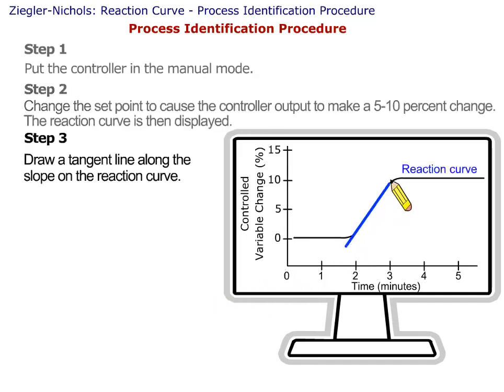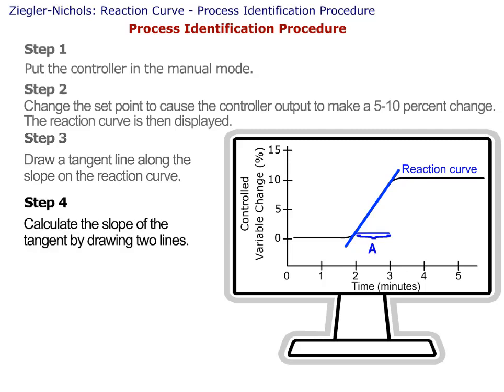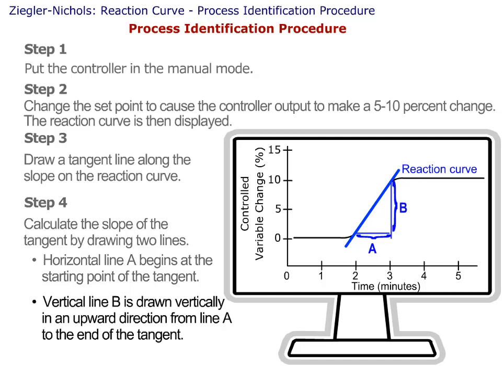Step 3: Draw a tangent line along the slope on the reaction curve. And Step 4: Calculate the slope of the tangent by drawing two lines. Horizontal line A begins at the starting point of the tangent. Vertical line B is drawn vertically in an upward direction from line A to the end of the tangent.